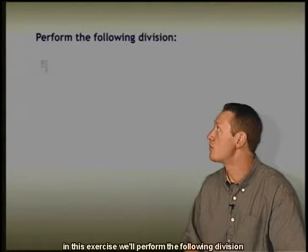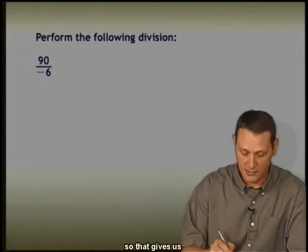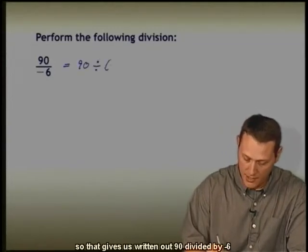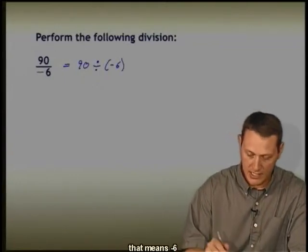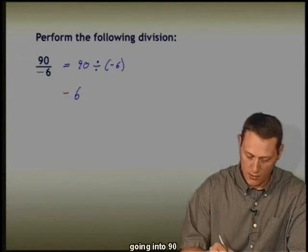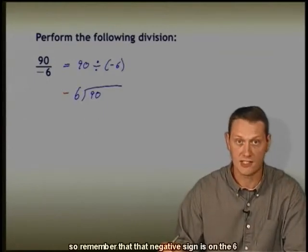In this exercise, we'll perform the following division: 90 divided by negative 6. So that gives us 90 divided by negative 6, which means negative 6 going into 90. We'll remember that negative sign is on the 6.